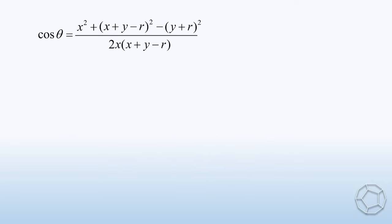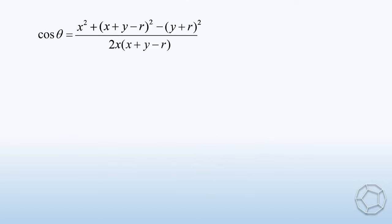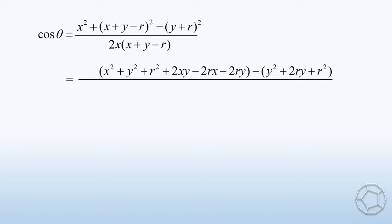Let's simplify it before moving on. We expand the two perfect square terms in the numerator. For (Y + R)², it's simply Y² + 2RY + R². For (X + Y - R)², we have three square terms, X² + Y² + R², and three cross terms, +2XY - 2RX - 2RY. We're not going to expand the denominator as you will see in a second.